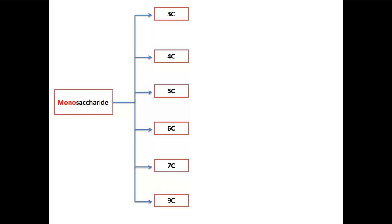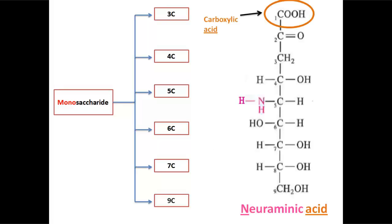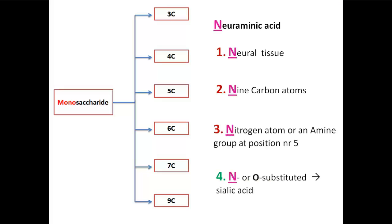And finally we have the nonoses. An important member in this category is neuraminic acid. It is an acid since it has a carboxylic acid group at the first position. Secondly, the first letter N in the name suggests four things: first, N for neural tissue - it is called neuraminic acid because it was first found in the brain or neuronal tissue; secondly, N for nine carbon atoms because neuraminic acid is a nine carbon atom monosaccharide; thirdly, N for nitrogen atom or amine group because a nitrogen atom or an amine group is attached to it at the fifth carbon; and finally, N for the N or O substitute.